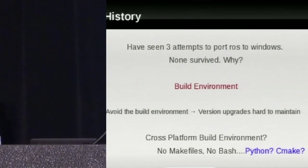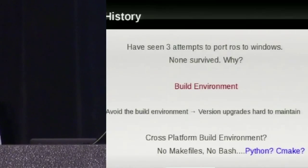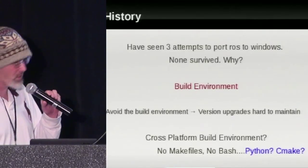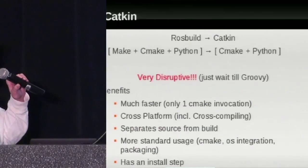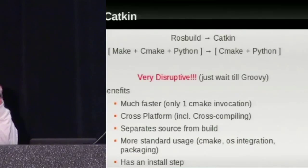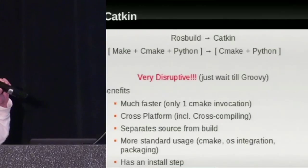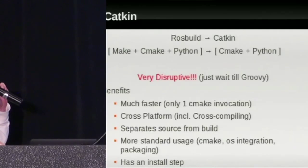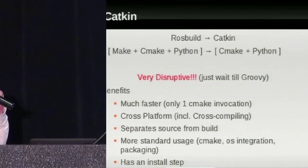If you avoid fixing the build environment, it's just not going to happen. The first thing we had to tackle was to make sure the build environment was compatible with what we have in ROS on Linux. The big problem is the make files and bash. So at the end of Diamondback, Troy Strassheim at Willow started working on a new CMake Python-based build environment. We're just moving to a purely CMake plus Python build environment. It's going to be very disruptive — it's really gone under the radar at the moment. You can still build the old way with ROS build, but that will eventually disappear.